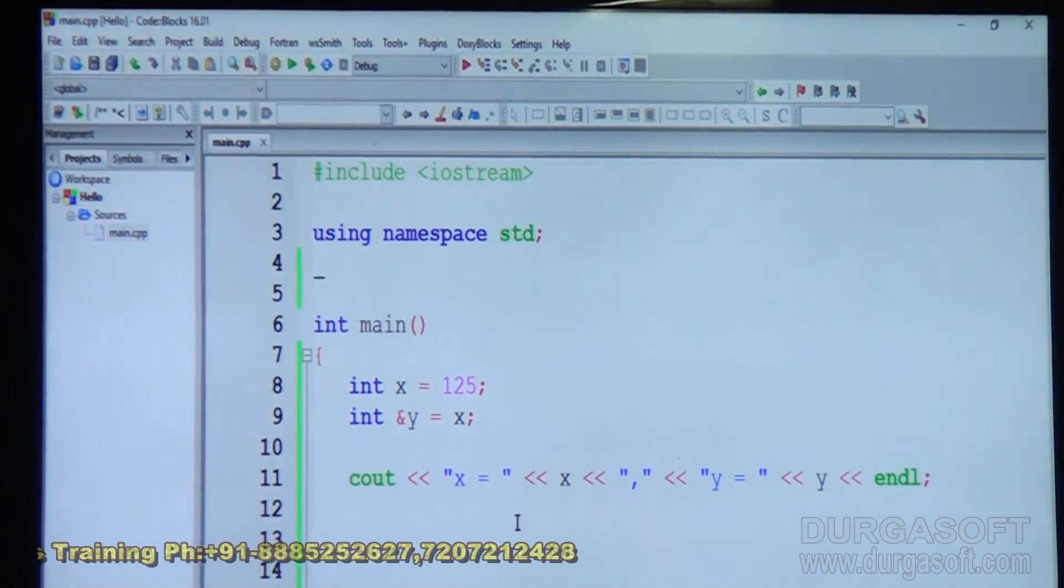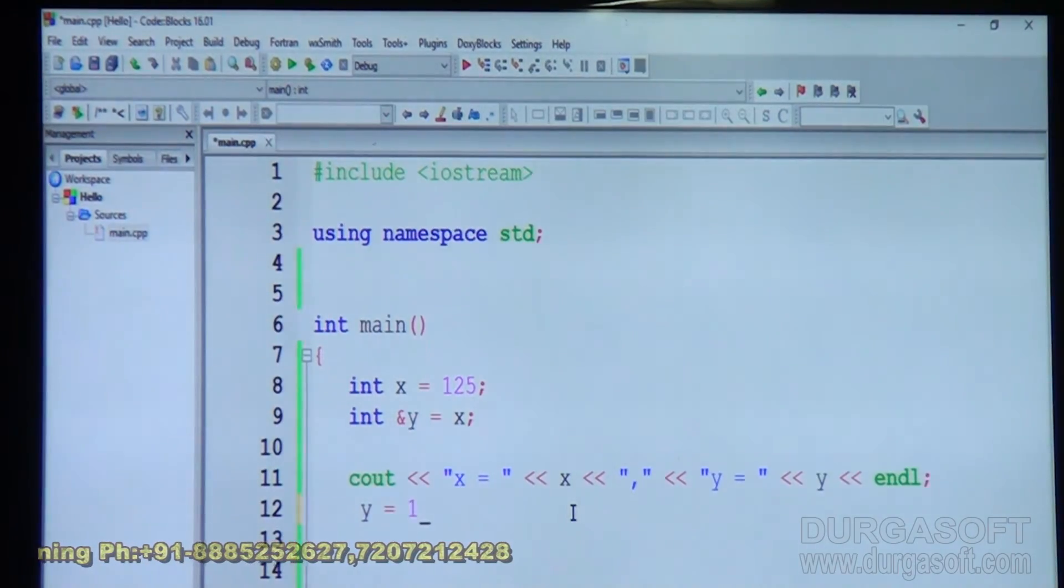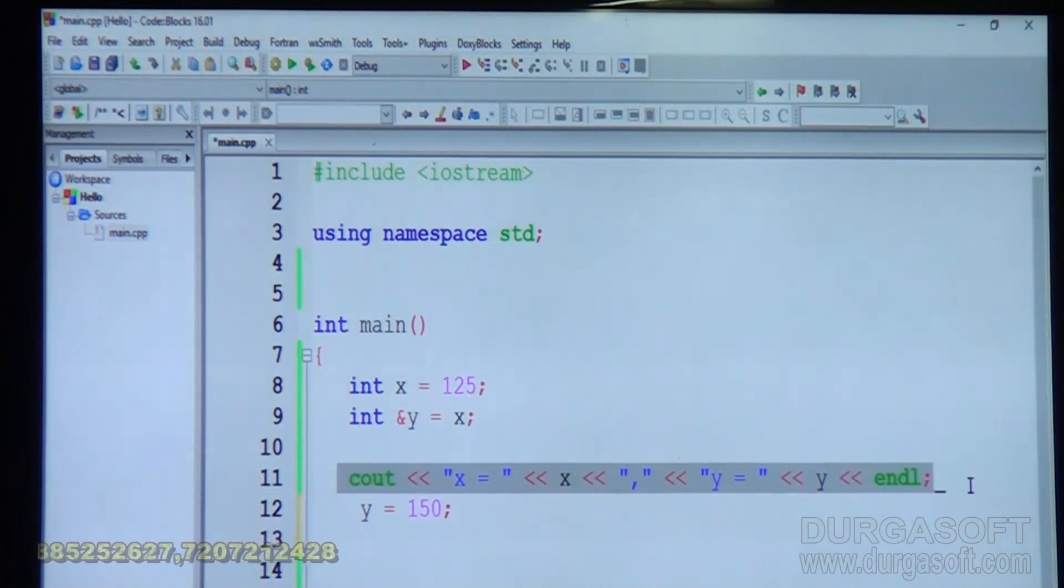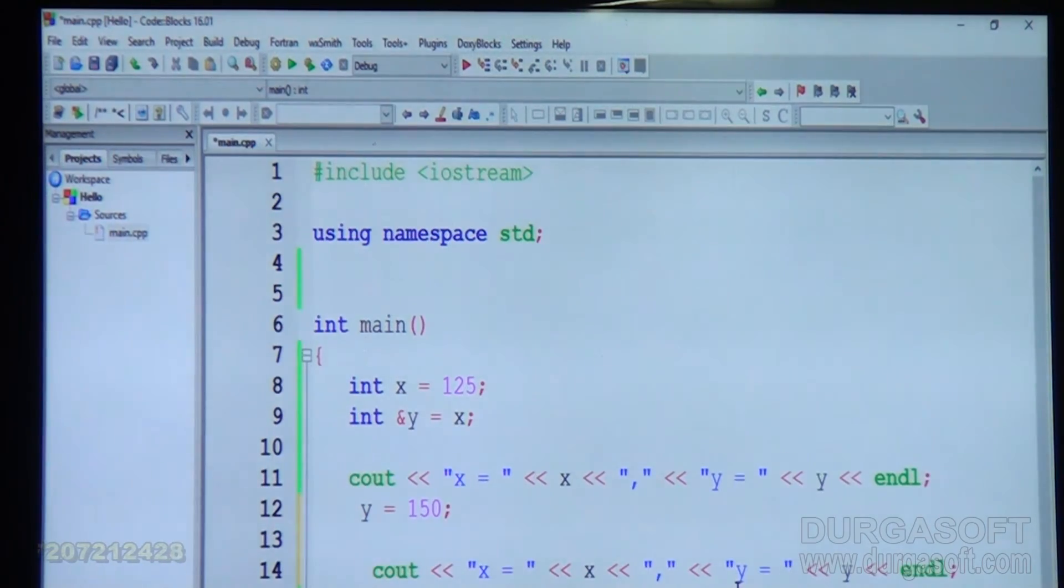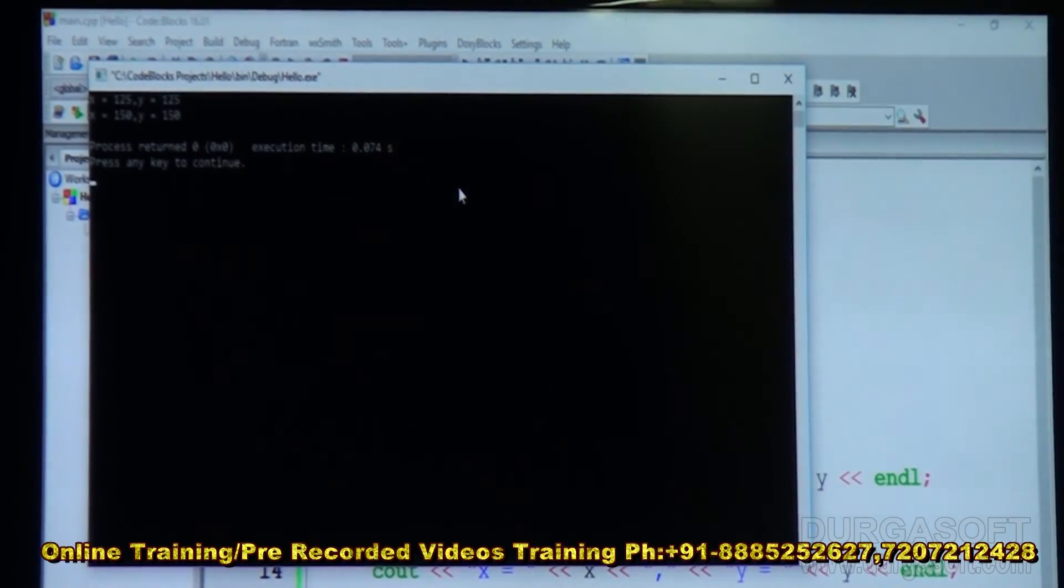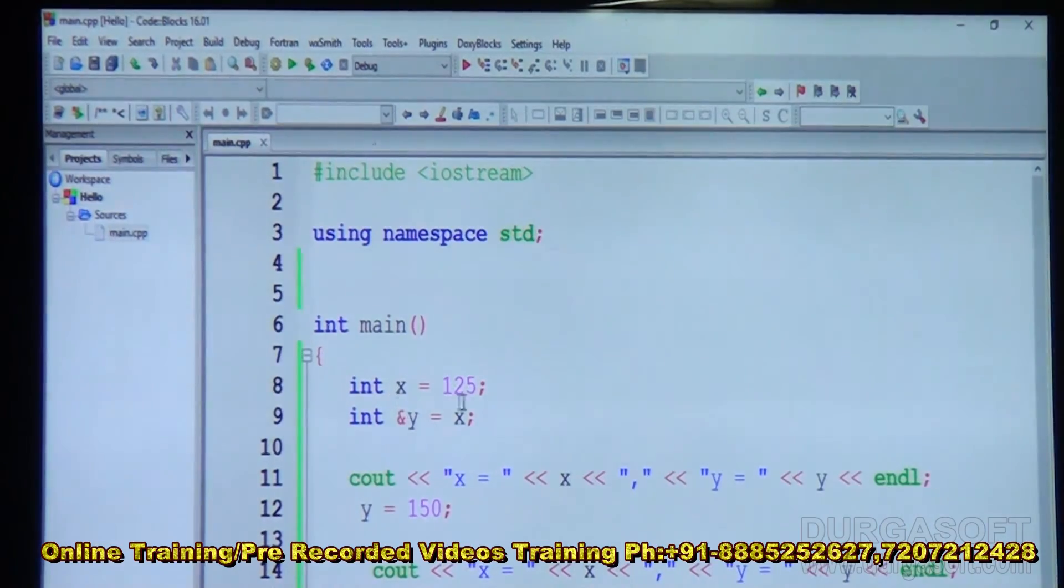Now let us modify x using y. Suppose y is equal to 150. I changed y to 150. Let us display x and y again. So this changes x also automatically. So both of them become 150. Run. Now both are 150. Therefore. First x value 125. We defined a reference for x. That is y. Then displayed x using the value of x and using the value of y also. Then we changed y. That is the reference. It changes x also automatically. Again. Both are displayed. Now you see the new value which has been modified using y.